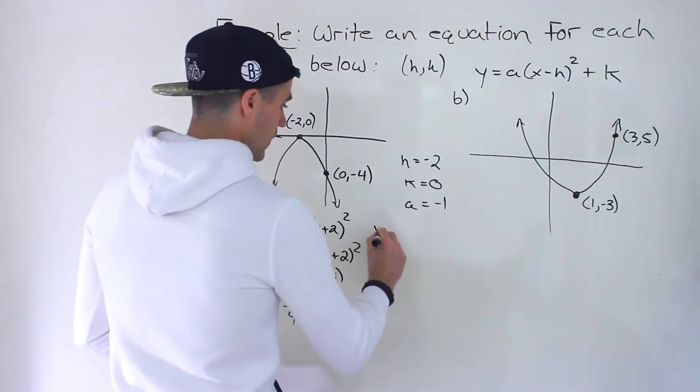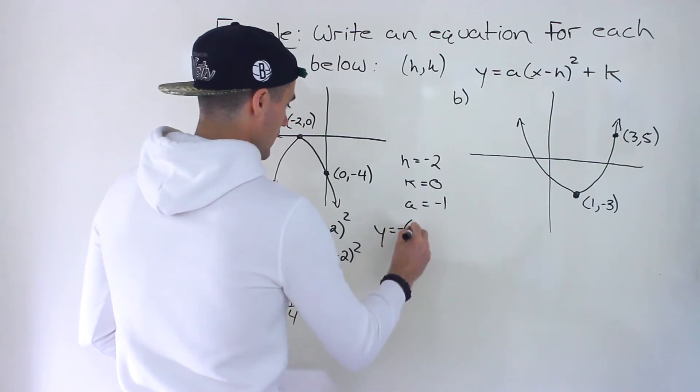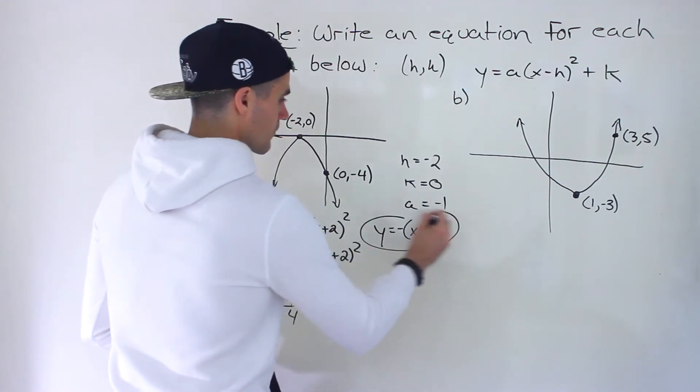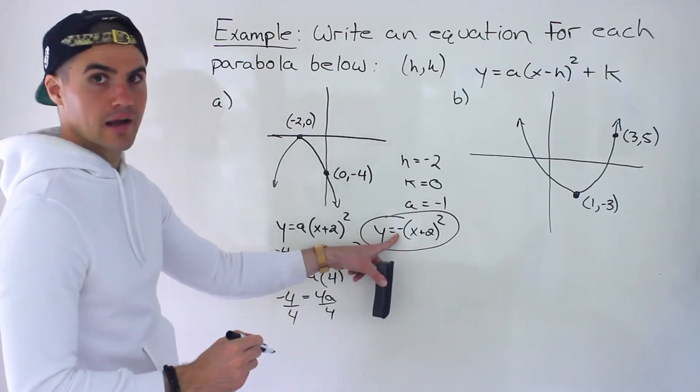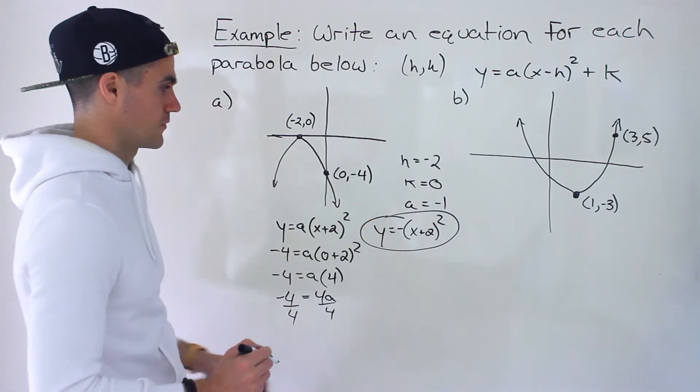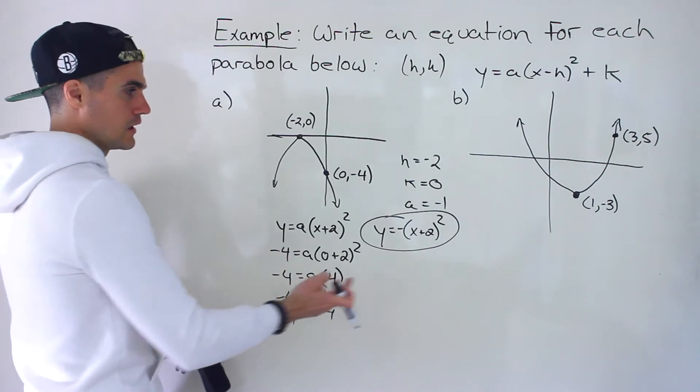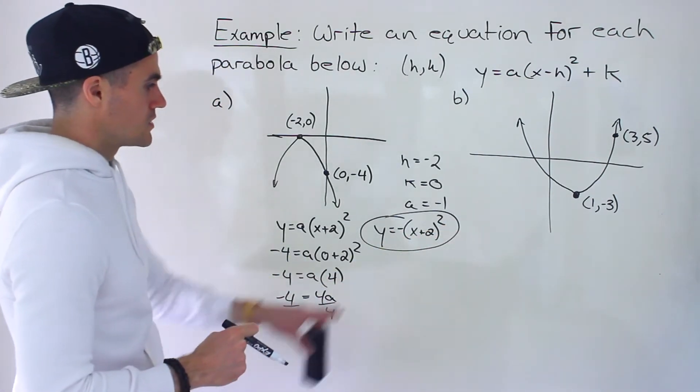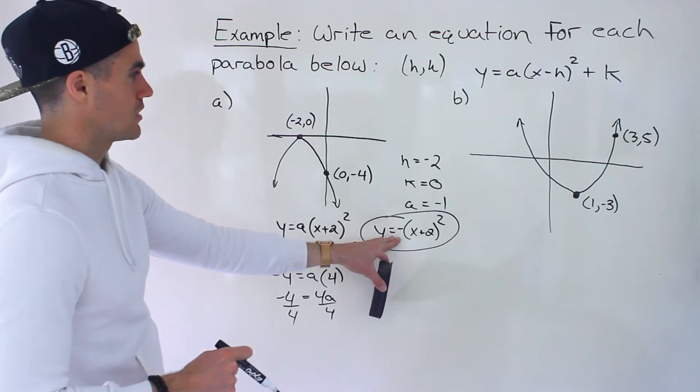So what's the final equation? y equals negative x plus two to the power of two. If it's negative one, you could just put a negative in front of the bracket. You don't have to actually write the negative one. Then notice the k value is zero. So we don't have to write that either. So this ends up being the equation here.